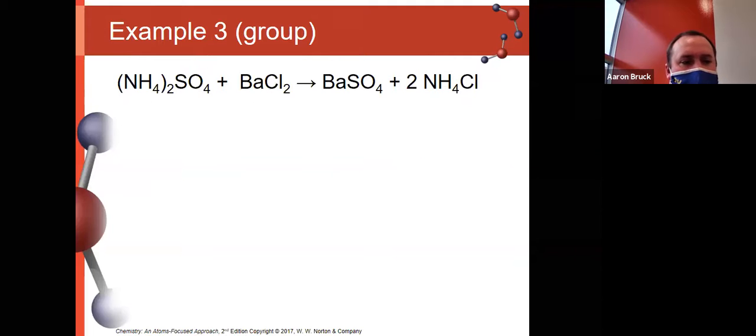All right. Try this one yourself. Molecular equation is balanced. We're talking about the reaction of ammonium sulfate with barium chloride to make barium sulfate and ammonium chloride. So walk through the process. We've already balanced the equation, so step one's done. Identify, break it into ions, and convert it to the net.